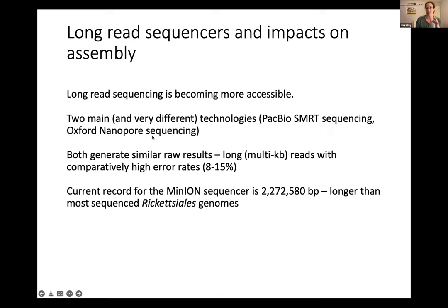Both technologies use totally different chemistries but generate really similar raw results: long multi-thousands of base pair reads that have quite a high error rate. The error rate of Illumina or NovaSeq is about 0.1% — really highly accurate. The error rate with long read sequencers is somewhere between 8 to 15%, and that's really where these technologies are working to improve.